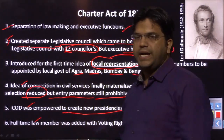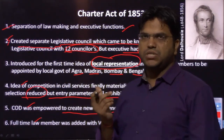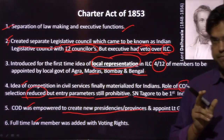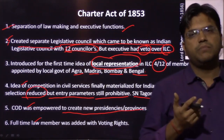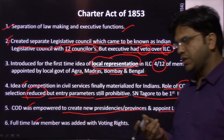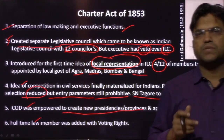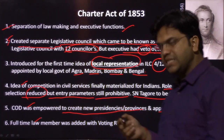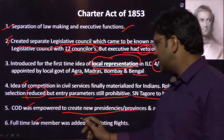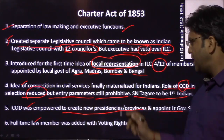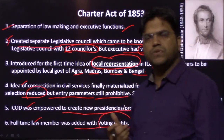The sixth provision was a full-time law member. Driving back to 1833, the law member joined the executive council by invitation — he was part-time with restricted powers, and could not vote on legislative matters. Through this Act of 1853, a fourth member is permanently added to the executive council as law member, and he is also extended voting rights. I hope all six provisions are clear.